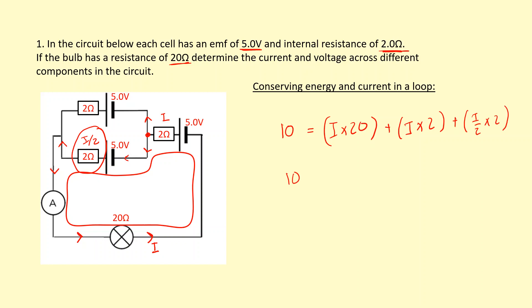The common factor is i, so I take that out: 20 plus 2 plus 2 over 2, which is 1, equals 23. That gives 10 over 23, which gives me a current of 0.435 amps.